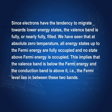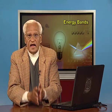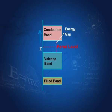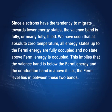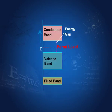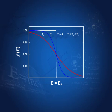Since electrons have the tendency to migrate towards lower energy states, the valence band is fully or nearly fully filled. We have seen that at absolute zero, all energy states up to Fermi energy are fully occupied and no state above Fermi energy is occupied. Therefore, the Fermi level lies somewhere in the energy gap — somewhere in the forbidden band — because there are no occupied energy states above it at 0 degrees Kelvin and below it all energy states are full. The Fermi level lies between the two bands.